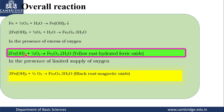Fe(OH)₂ gets converted into either yellow rust or black rust depending on the medium. If Fe(OH)₂ reacts with ½O₂ and H₂O, it gives yellow rust — meaning both moisture and oxygen must be present. In the absence of moisture with only an insufficient amount of oxygen, it gives black rust. Yellow rust is hematite and black rust is magnetite. From these, iron can be extracted — this is the rust formation process.